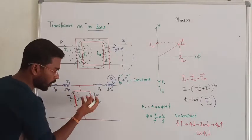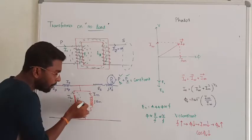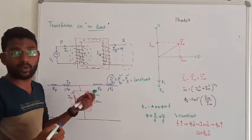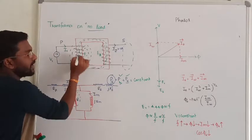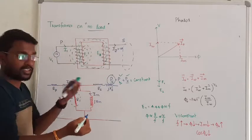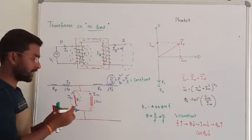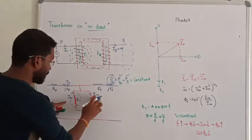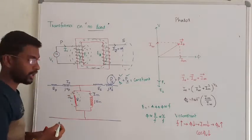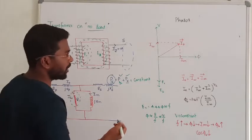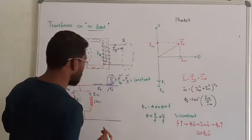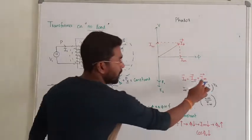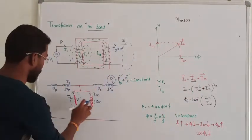Apart from the core loss current, the transformer will also consume a magnetizing current, which is responsible for producing flux. So we have two components of no-load current: the total no-load current is the vector sum of the winding current and the magnetizing current.